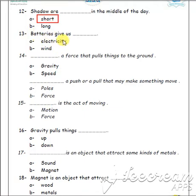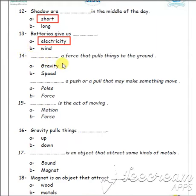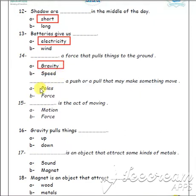Batteries give us electricity — they make the alarm clock and our toys work. Number 14: what is a force that pulls things to the ground — gravity or speed?